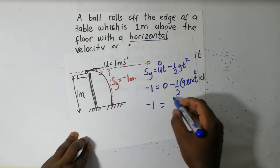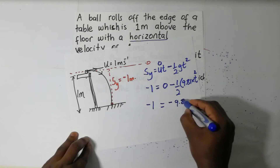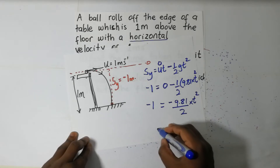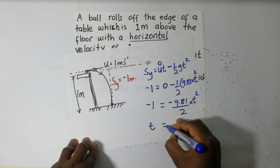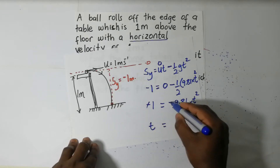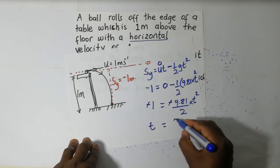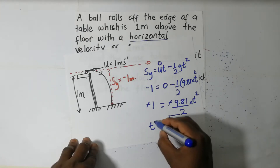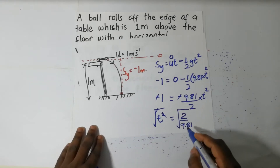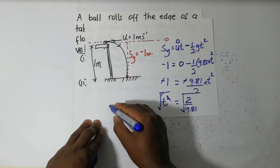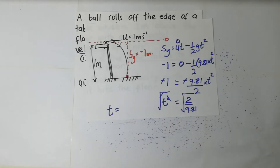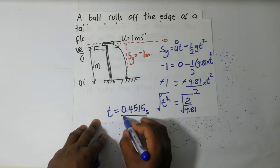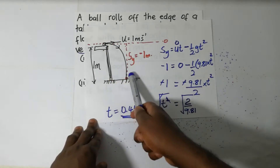So negative one equals negative 9.81 divided by two, multiplied by t squared. Making t the subject: multiply both sides by two over 9.81, then take the square root on both sides. We end up with t equal to 0.4515 seconds. That's the time it takes for the ball to come and hit the ground.